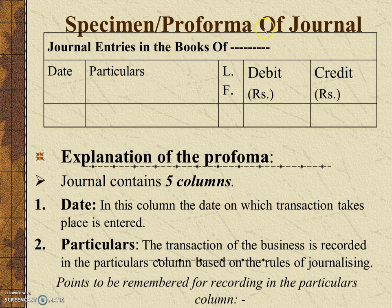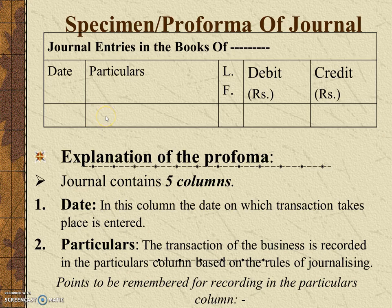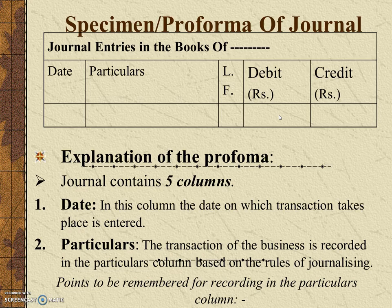Now let's look at the format for the journal. First, we write the heading: 'Journal Entries in the Books of [Name of Company].' The first column is for the date — we write the date on which the transaction takes place. Another column is called ledger folio, where folio means page number, so we write the page number of the ledger here. There are two columns for amount: one for debit and one for credit, where we write the respective amounts.